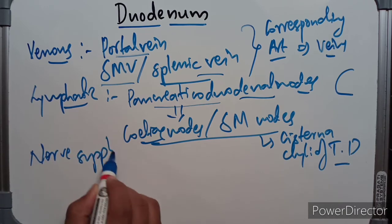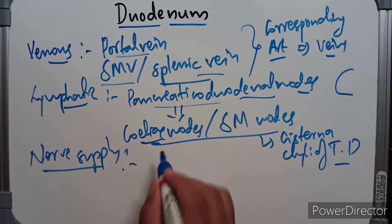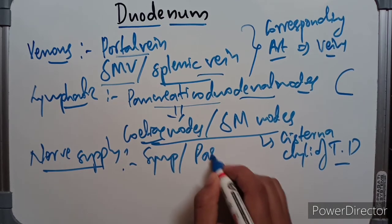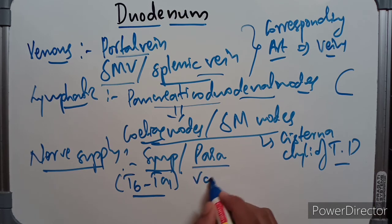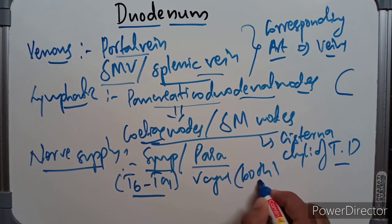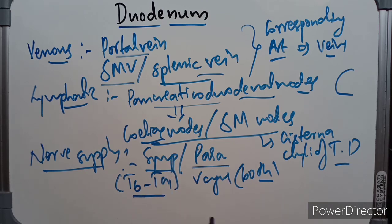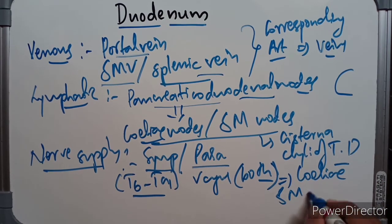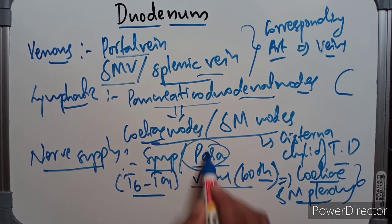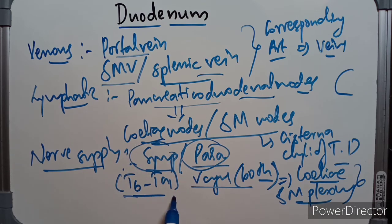Finally, the nerve supply of the duodenum: it has both sympathetic and parasympathetic supply. The sympathetic supply is from the T6 to T9 spinal segments. The parasympathetic supply is from both the right and left vagus nerves, which provide parasympathetic innervation through the celiac plexus and the superior mesenteric plexus.